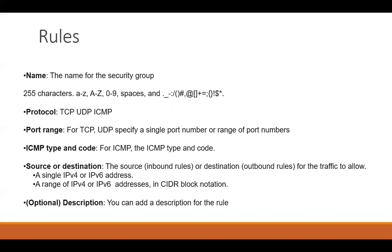We can define port ranges as well as a single port number. We can also define ICMP types like type 8 — an echo request — and define the ICMP type and code. When defining the source for inbound rules and destination for outbound rules, we can either define a single IPv4 or IPv6 address, or define a range in CIDR block notation. There are many other options while creating the rule, and there is also an optional description field. It's always better to add a description explaining what the rule does.